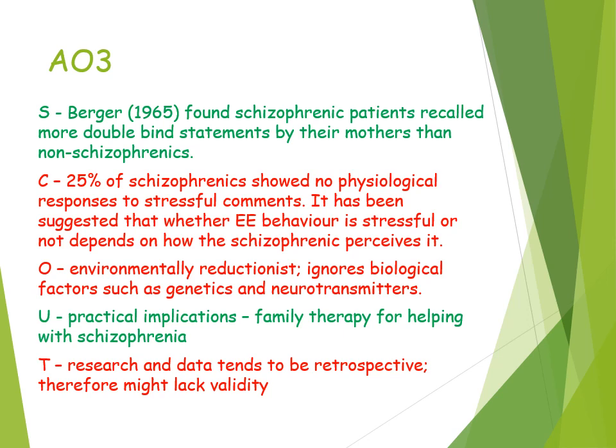For AO3 evaluation, there is supporting evidence that double bind theory does appear to explain the development of schizophrenia. It was found that schizophrenic patients recorded more double bind statements from their mothers than non-schizophrenics, suggesting a link between schizophrenia and contradictory communication patterns, which strengthens the theory. However, a weakness regarding testability is that research tends to be retrospective — relying on schizophrenic patients recalling childhood statements — so it may lack validity. It is also self-report, meaning there may be social desirability bias, causing methodological problems.